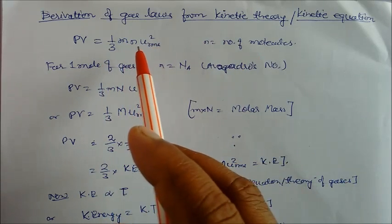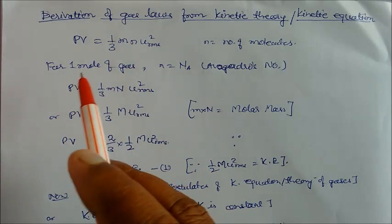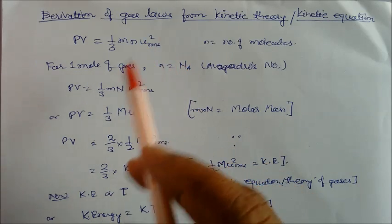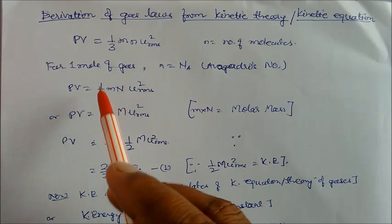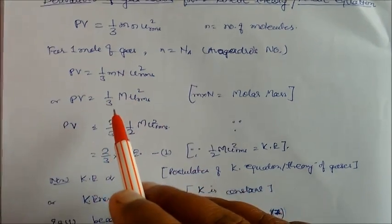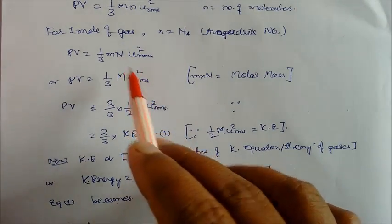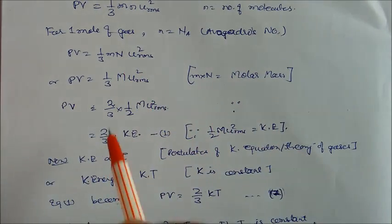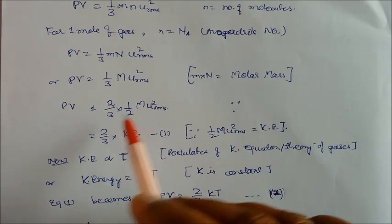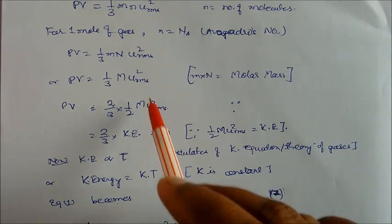Here N is the number of molecules and m is the mass of one molecule. Now for one mole of gas, N can be written in terms of Avogadro's number. Substituting this, pV = (1/3) × m × N × u_rms², and since m × N equals the molar mass M, multiplying by 2/3 gives pV = (2/3) × (1/2) × M × u_rms².